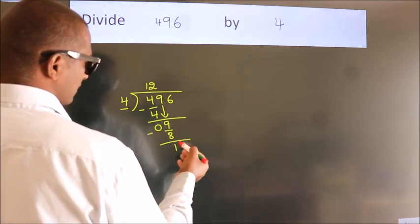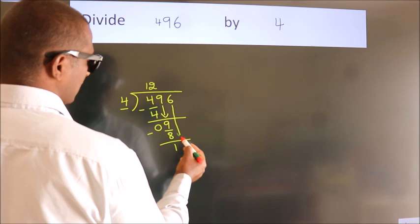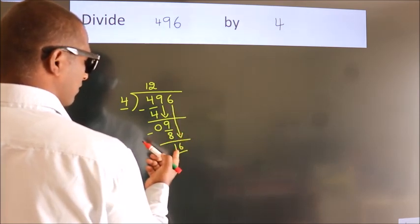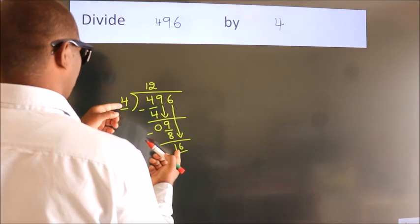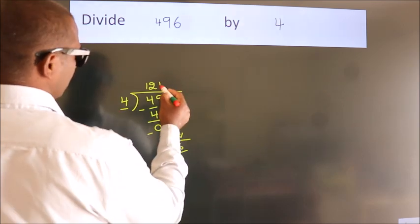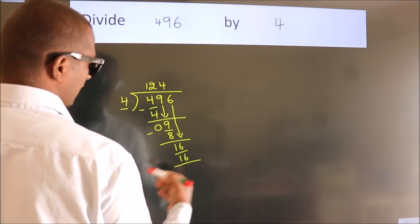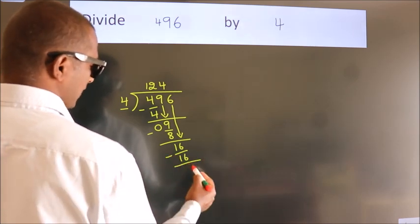After this, bring down the beside number. So 6 down. So 16. When do we get 16? In 4 table. 4 fours, 16. Now, we subtract. We get 0.